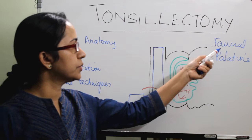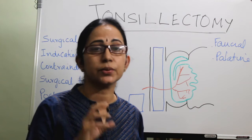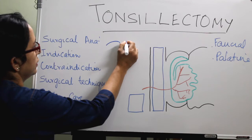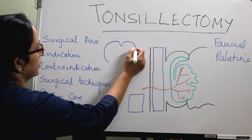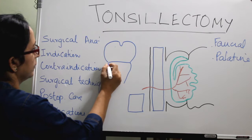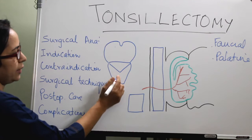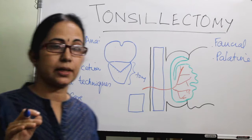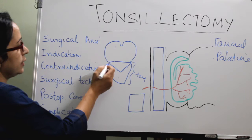The tonsils are otherwise called the faucial tonsils or the palatine tonsils. They are situated in the oropharynx. If I draw the oropharynx, there will be the free border of the soft palate, uvula, then the anterior pillar, and here comes the tongue, divided into posterior one-third and anterior two-thirds. The oral cavity includes the tongue, and the oropharynx is bounded superiorly by the free border of the soft palate and the uvula. There are two pillars also.